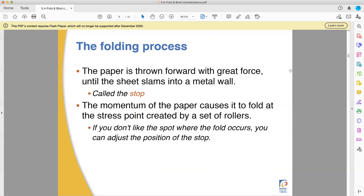Anyways, at first the paper is being pulled into the folder really fast and it hits a metal wall. The metal wall is called the stop. The momentum of the paper, which is already moving so fast and the back end of the paper is still being pushed by rollers or conveyors, causes it to push into a pressure point, a stress point, caused by the set of rollers. And basically you set the stop, that metal wall, the distance away from your first fold that you want that first fold to be. So if you're folding an eight and a half by 11 sheet of paper in half, you set that stop, that metal wall at five and a half inches. So when it goes in on that long edge on the short edge, it'll hit and that five and a half will be where the crease happens.